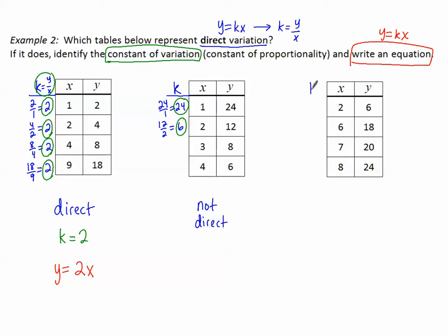Maybe you try one more — pause the video and come back to see how you did. 6 divided by 2 is 3; 18 divided by 6 is 3 — so far so good. But 20 divided by 7 is not equal to 3, so not direct variation here.